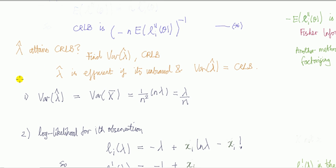In our question, does lambda hat attain the Cramér-Rao lower bound? One method is to compute the variance of lambda hat and also compute the Cramér-Rao lower bound and then compare them. If they're equal, we can say that lambda hat attains the Cramér-Rao lower bound.